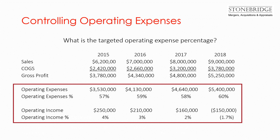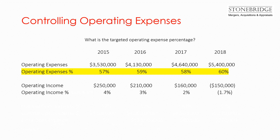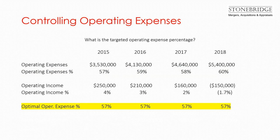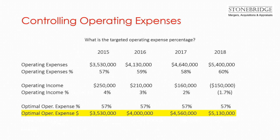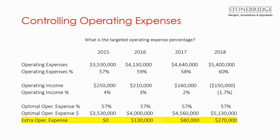Let's take the operating expense numbers and move them to the top. The lowest operating expenses as a percentage of sales was 57% in 2015. Let's apply the 57% goal across the past years to see what the extra cost was. We now apply the optimal numbers and see what the operating expenses would have been. The difference between the optimal and actual expenses is the extra cost. In 2018, the extra operating cost amounted to $270,000.